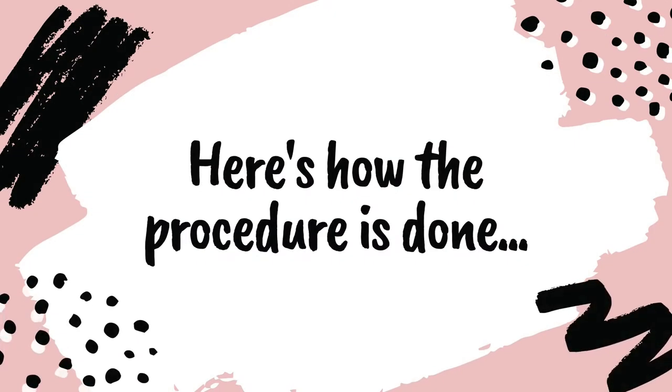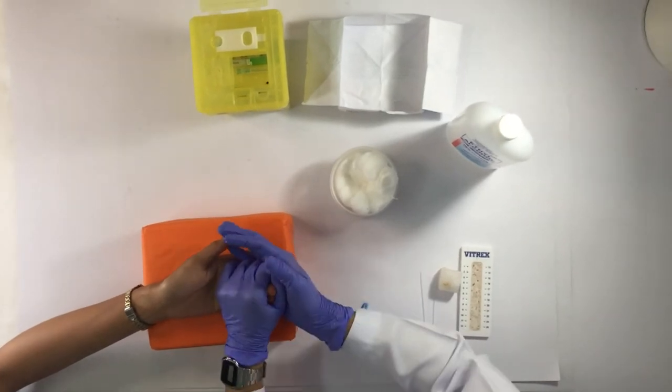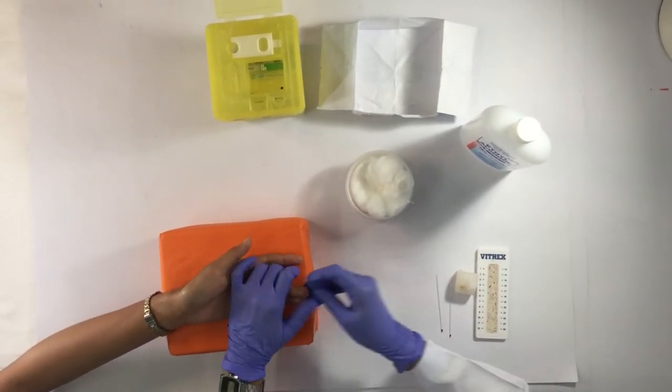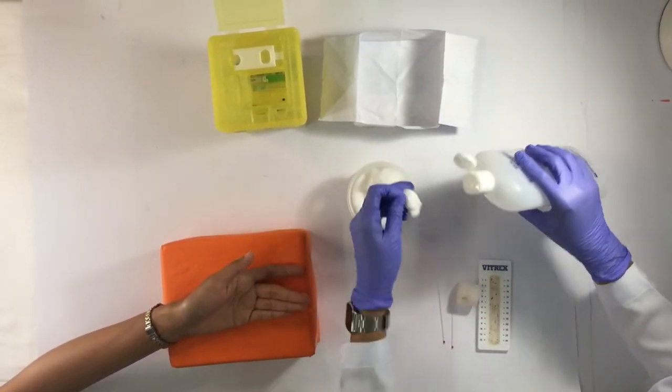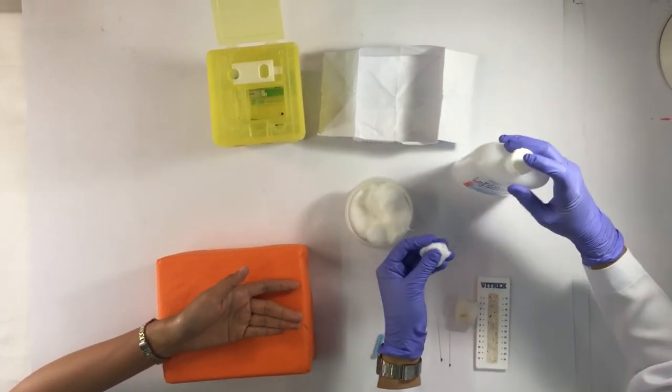These are the steps in performing the capillary puncture. First, choose an appropriate site for collection. The third and fourth finger of the non-dominant hand is usually chosen as a site of collection.